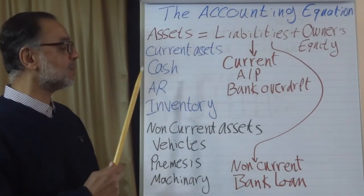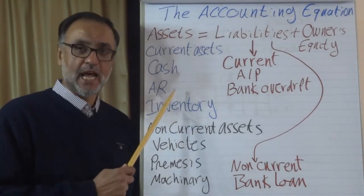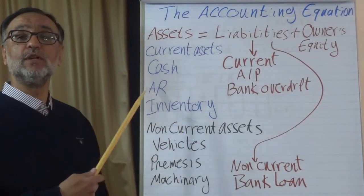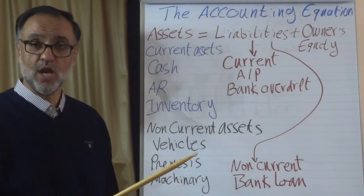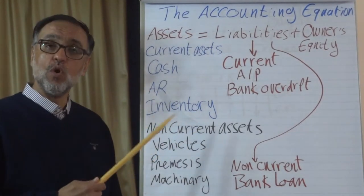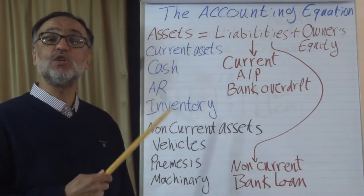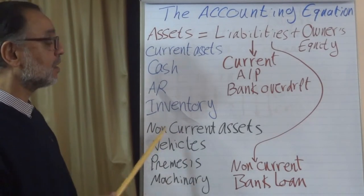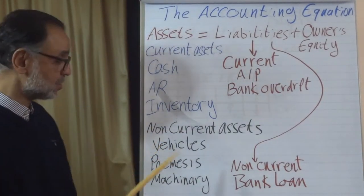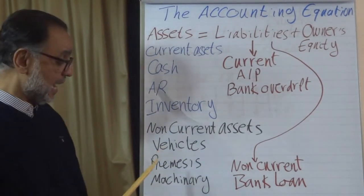Assets are divided into current and non-current assets. Current assets include cash, accounts receivable — which are credits given to customers, typically collected within 30 to 90 days — and inventory, which should be convertible to cash within the year. Current assets have a useful life of less than one year and are easily convertible to cash. Non-current assets have a useful life of more than one year and are not easily convertible to cash — examples include vehicles, premises, and machinery.